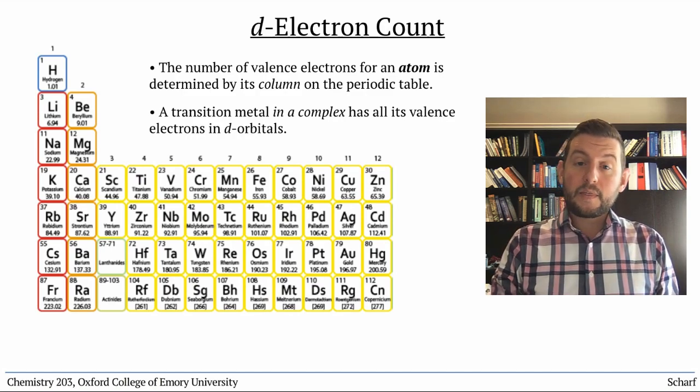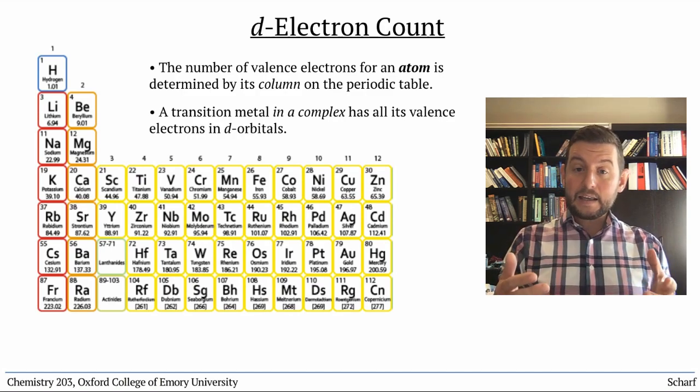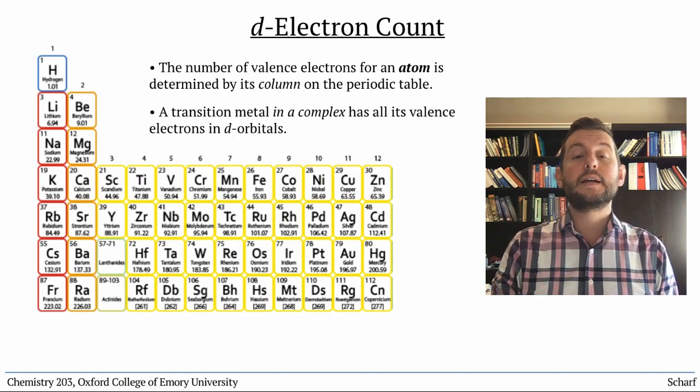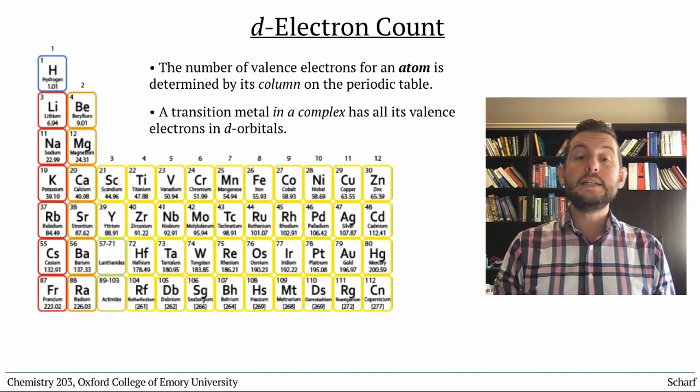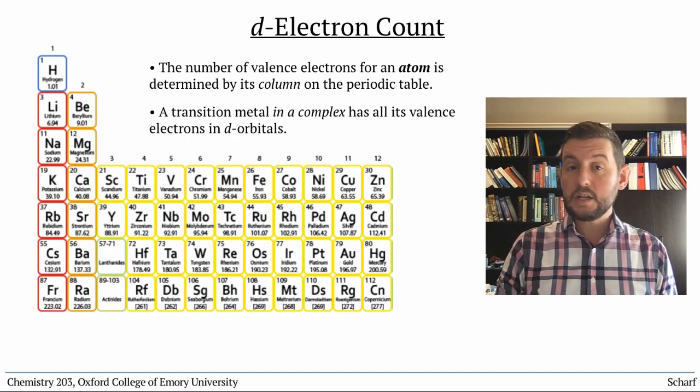Remember that when atoms become cations, they lose valence electrons. So we can easily calculate the total number of valence d electrons based on the identity of the metal and its oxidation state.